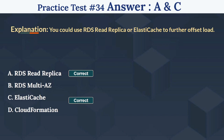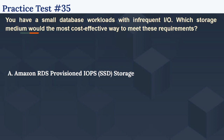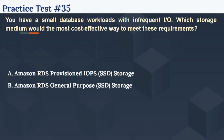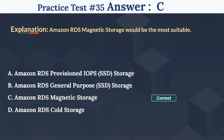So the 35th question is: You have small database workloads with infrequent I/O. Which storage medium would be the most cost-effective way to meet these requirements? The options are: Option A Amazon RDS Provisioned IOPS SSD Storage, Option B Amazon RDS General Purpose SSD Storage, Option C Amazon RDS Magnetic Storage, Option D Amazon RDS Cold Storage. The right answer is C, Amazon RDS Magnetic Storage, which would be the most suitable.